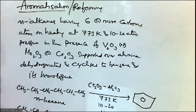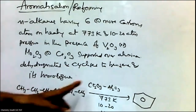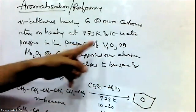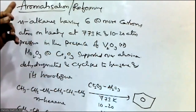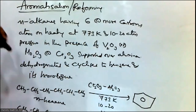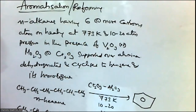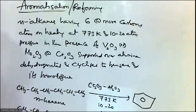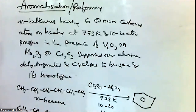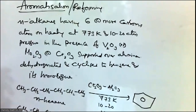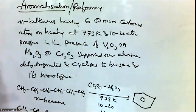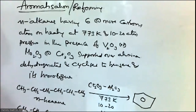Aromatization or reforming reaction involves Cr2O3, V2O3, or Mo2O3 on alumina — dehydrogenation followed by cyclization to form aromatic compounds. Non-aromatic or aliphatic compounds are converted into aromatic compounds. Isomerization means alkanes on heating in the presence of anhydrous aluminum chloride and HCl gas are isomerized to branched-chain alkanes. Thank you for watching Tranad Chemistry Classes. Please like the video, share and subscribe the channel.